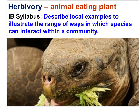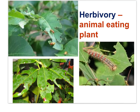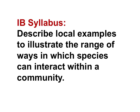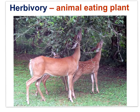Here is a photograph of herbivory — an animal ingesting plant material. This is the Galapagos tortoise, Chelonoides nigra. Here are additional photographs of herbivory displaying the impact of insect herbivory on plants. You need to be able to describe local examples to illustrate the range of ways in which species can interact within a community.